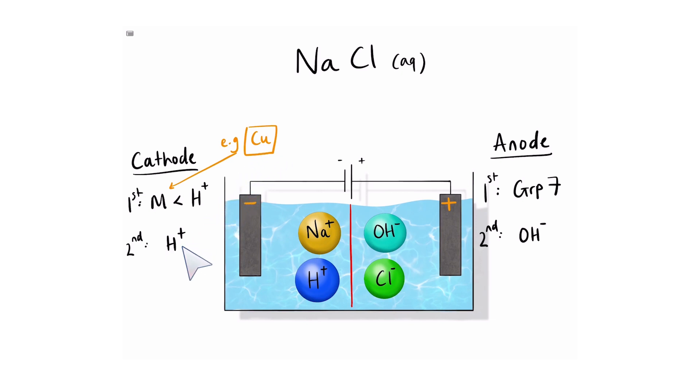So let's use these rules to find out which of these ions will move to the electrodes and which ones will stay in the solution. Let's start with the anode. We can see we have chloride and hydroxide ions in solution. Since chloride is in group 7, it takes first priority and moves towards the electrode and turns back into its elemental form, chlorine gas.